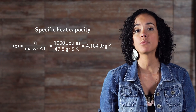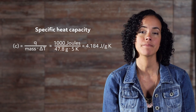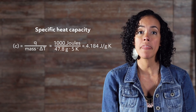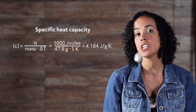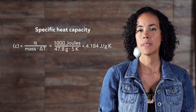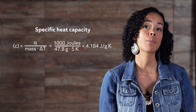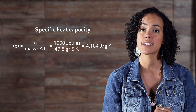With some simple division, we can derive the specific heat capacity of water from our hypothetical cup of water. Specific heat capacity C equals heat released Q over mass times change in temperature delta T, which equals 1,000 joules over 47.8 grams times 5 Kelvin, which equals 4.184 joules per gram Kelvin. From this, we know that it takes 4.184 joules to raise the temperature of 1 gram of water by 1 degree Celsius. That's the specific heat capacity of water.